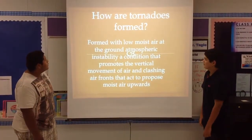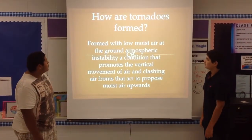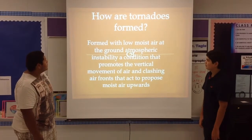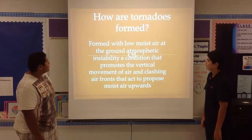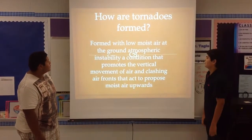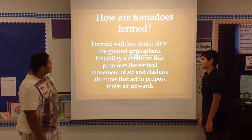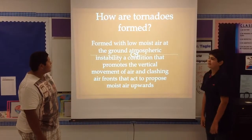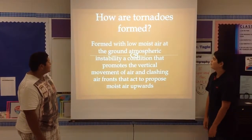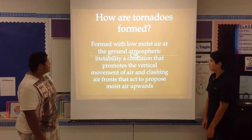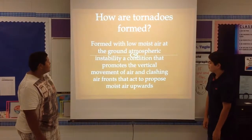How are tornadoes formed? Tornadoes form with low, moist air at the ground and atmospheric instability, and a condition that promotes the vertical movement of air — clashing air fronts that act to push moist air upward.